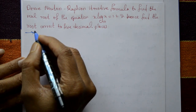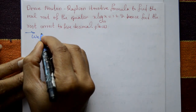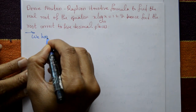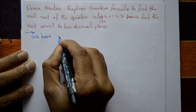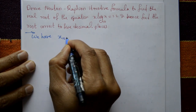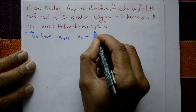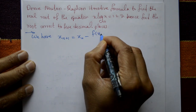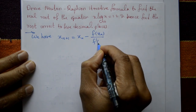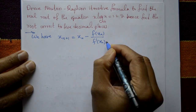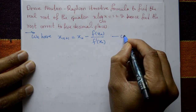Solution. The Newton-Raphson method is: x_{n+1} = x_n minus f(x_n) divided by f'(x_n). Call this equation number 1.